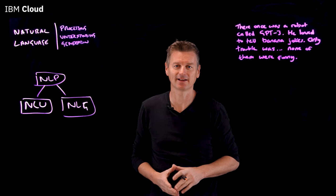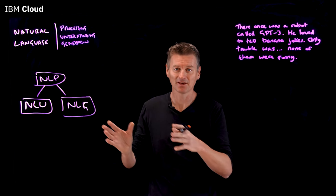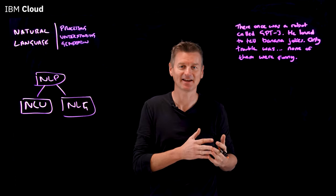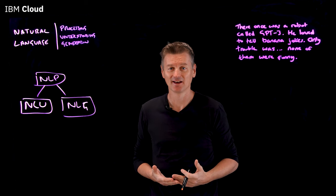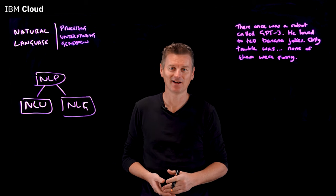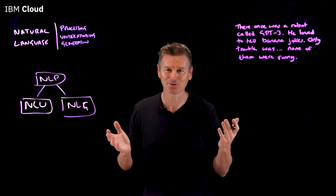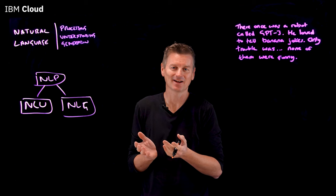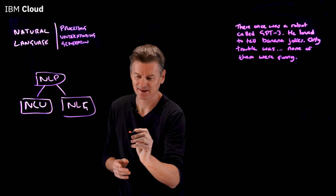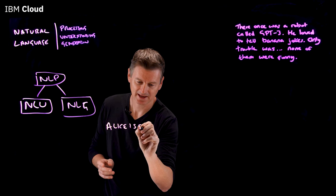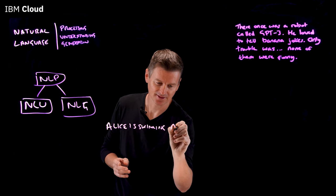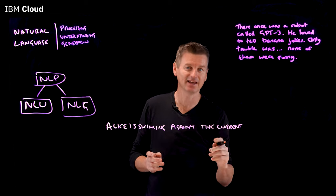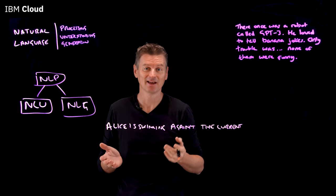Let's focus instead on natural language understanding and natural language generation. Natural language understanding uses syntactic and semantic analysis of text and speech to determine the meaning of a sentence. Unlike structured computer code, our unstructured human language has all sorts of nuances that NLU needs to account for. For example: "Alice is swimming against the current" — this is a sentence we could feed into an NLU algorithm and ask it to make sense of.